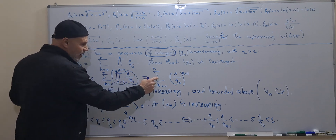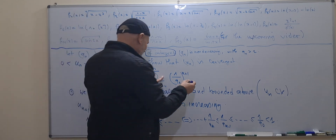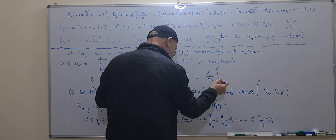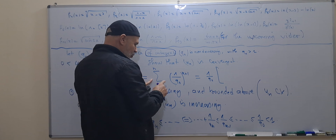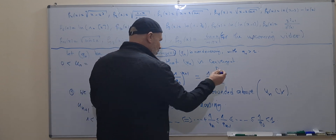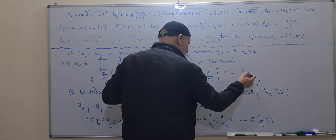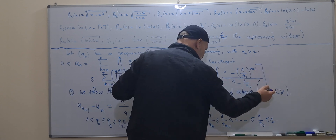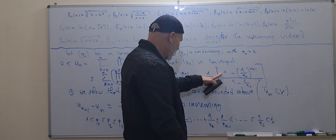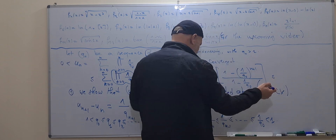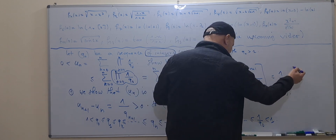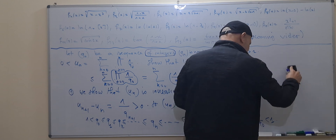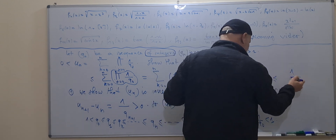So u_n is less than or equal to this sum, which equals one divided by q_0 times the sum of a geometric sequence: one minus one divided by q_0 to the power n plus one, all divided by one minus one divided by q_0. This is less than or equal to one divided by q_0 divided by one minus one over q_0, which equals one divided by q_0 minus one.